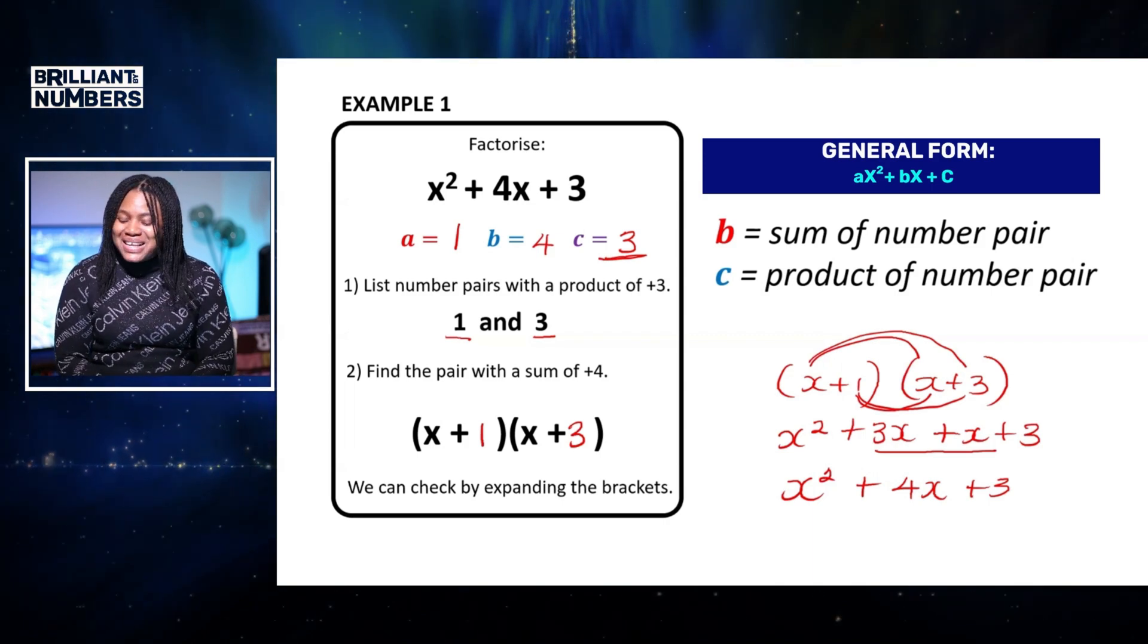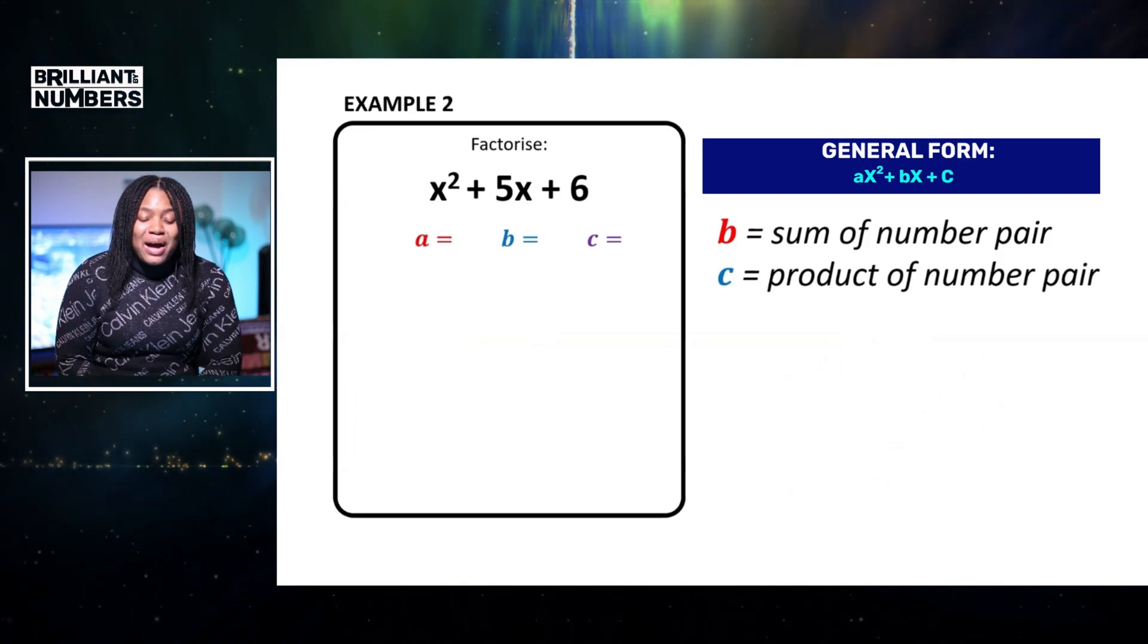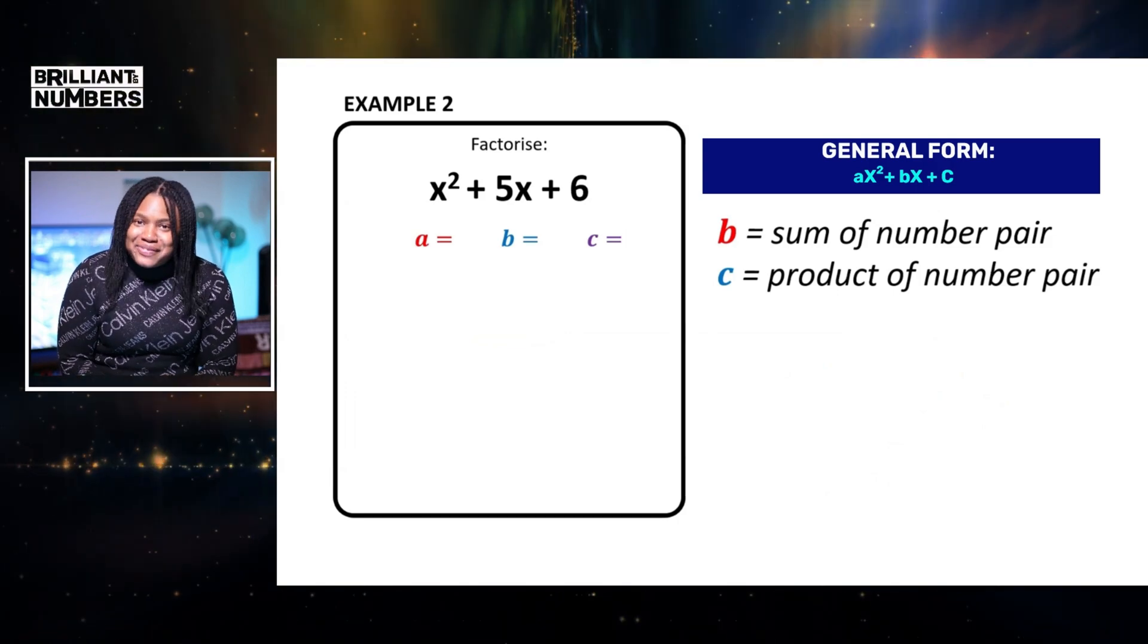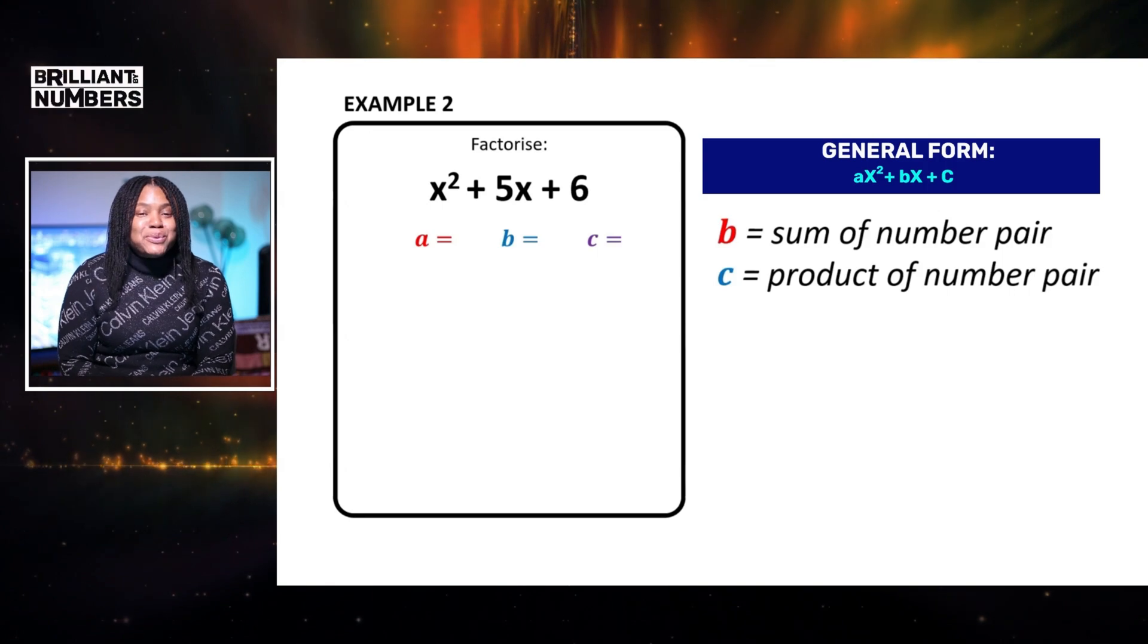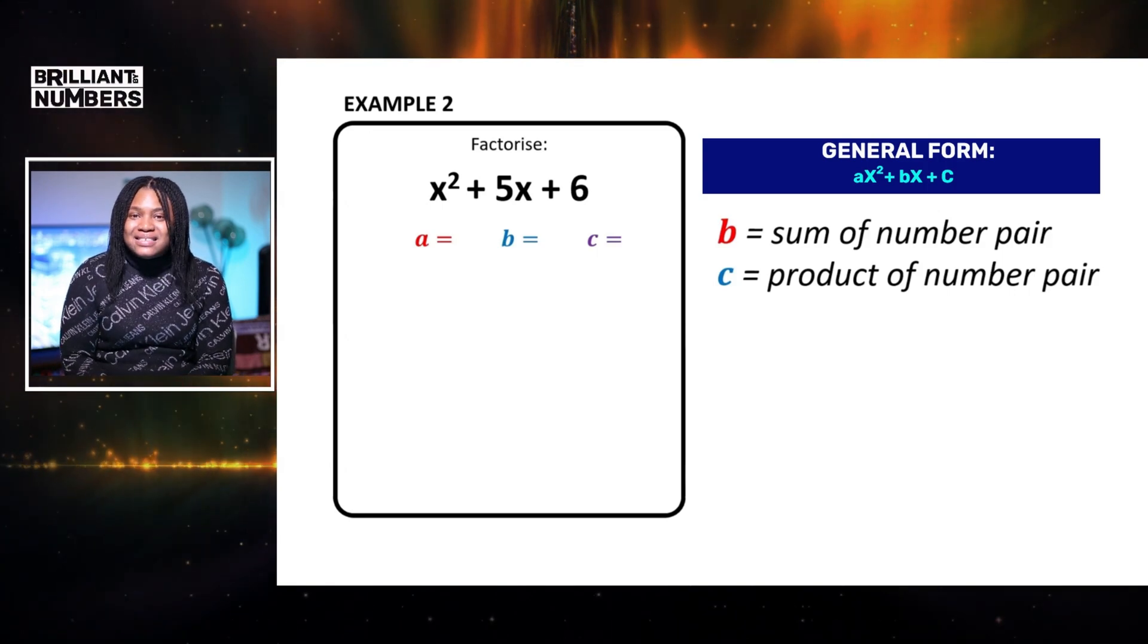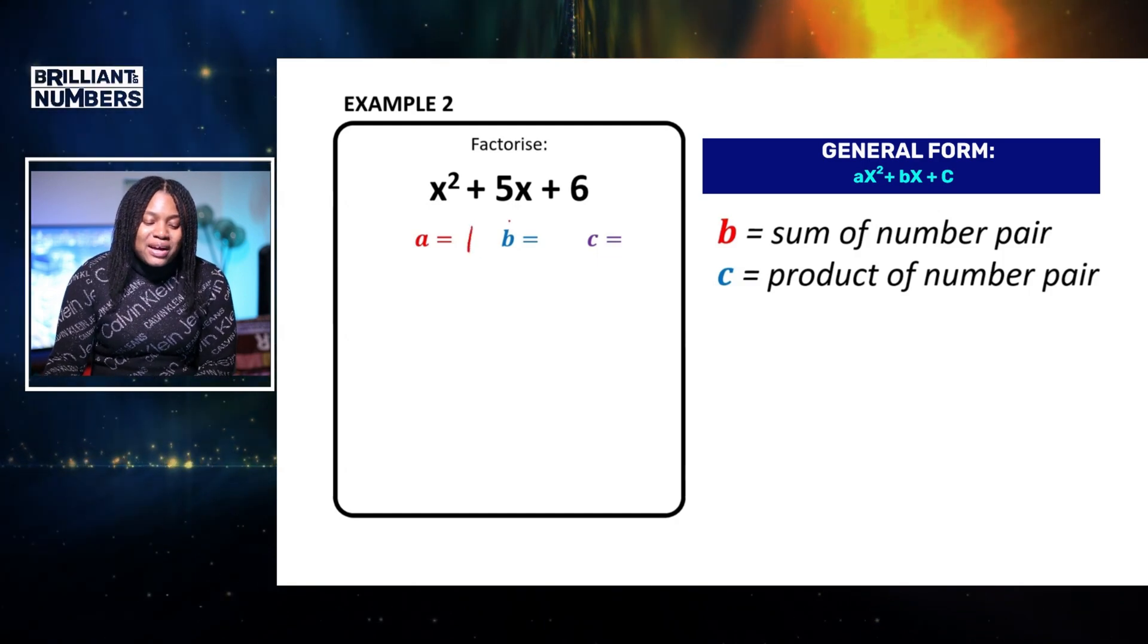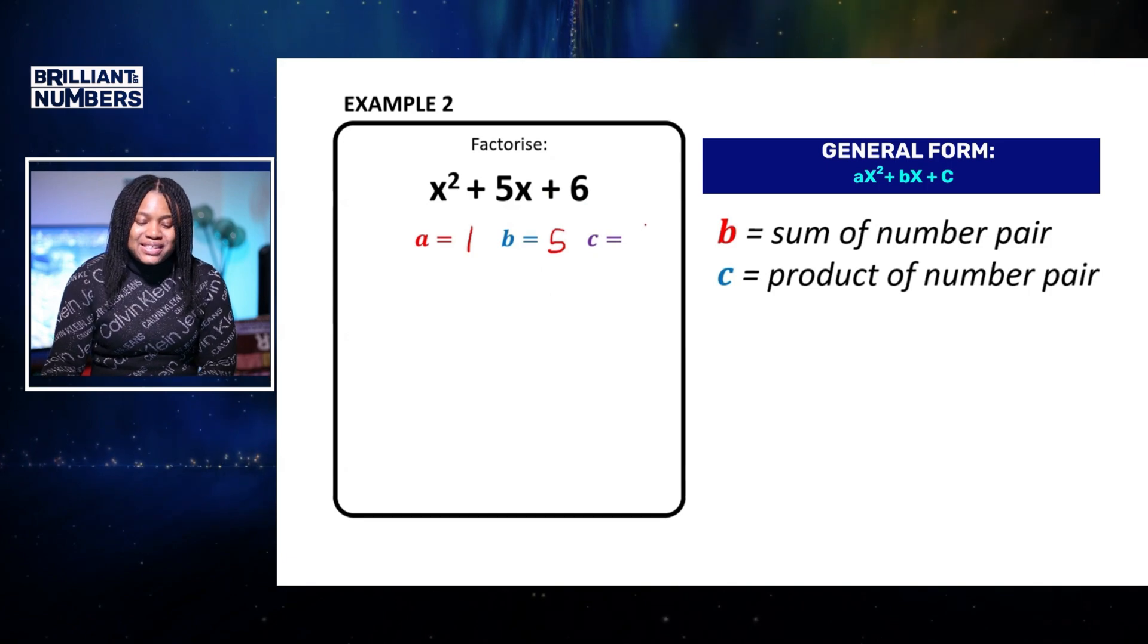Let's dive into a second example. So hey, I want you to work along with me. I've got x squared plus 5x plus 6. I'm just going to go ahead and I'm going to write down my a, b, and c. So in this expression, a is equal to 1, b is equal to 5, and c is equal to 6.